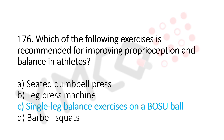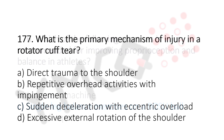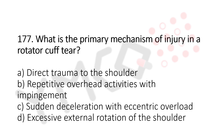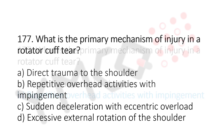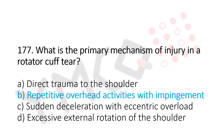Let's move to question number 177. What is the primary mechanism of injury in a rotator cuff tear? Option A, direct trauma to the shoulder. Option B, repetitive overhead activity with impingement. Option C, sudden deceleration with eccentric overload. Option D, excessive external rotation of the shoulder. And the answer is Option B, repetitive overhead activities with impingement.